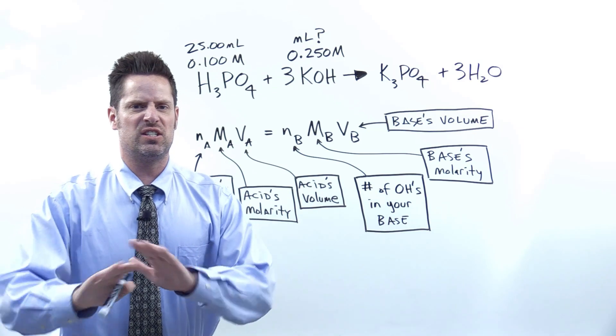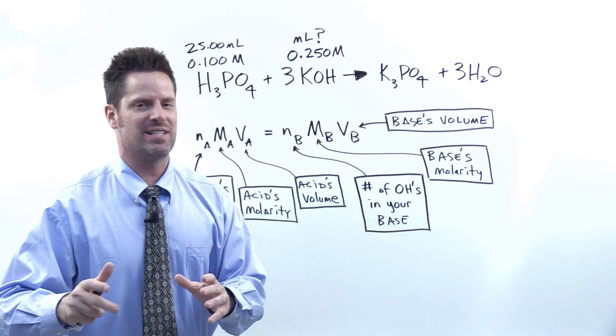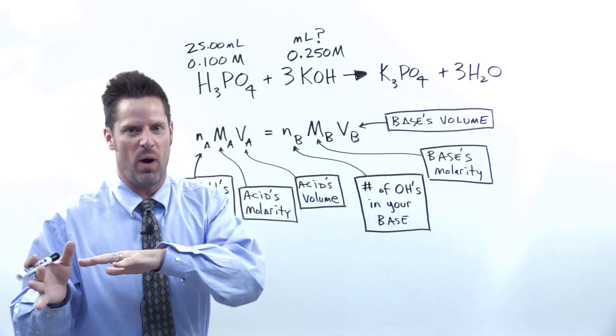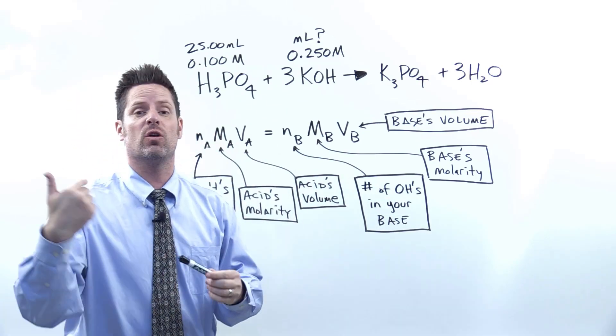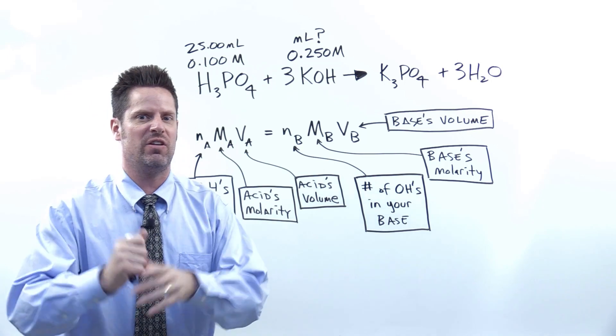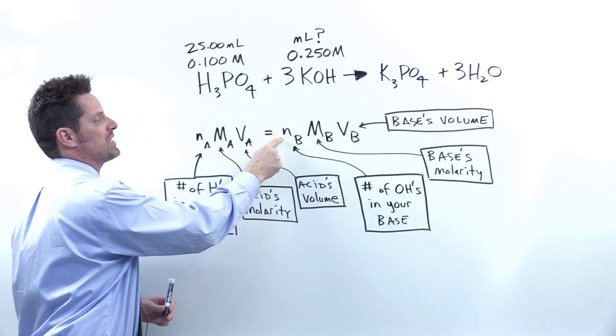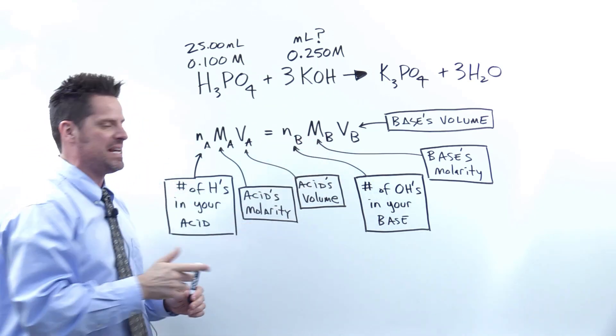So when given a simple, balanced acid-base or neutralization reaction like the one provided here, with volumes and concentrations of one thing and or the other, and you're asked to solve for one of those missing variables, this is a very simple NaMaVa equals NbMbVb problem,